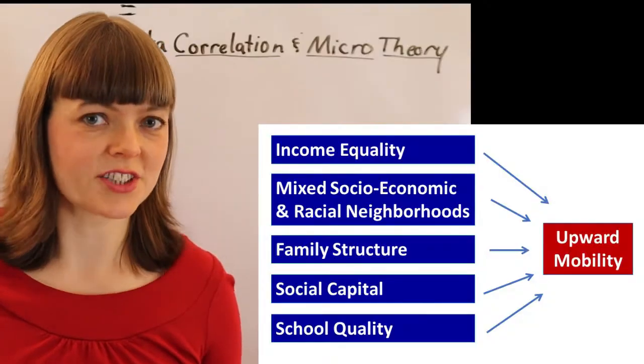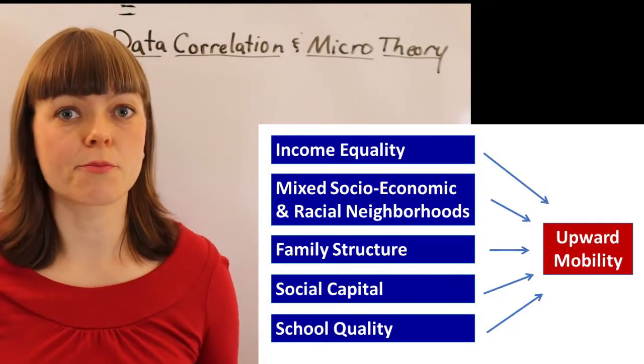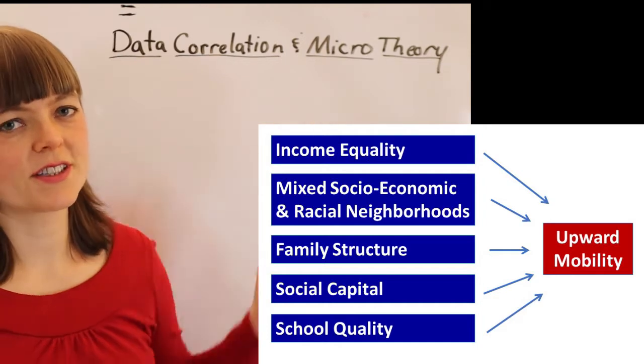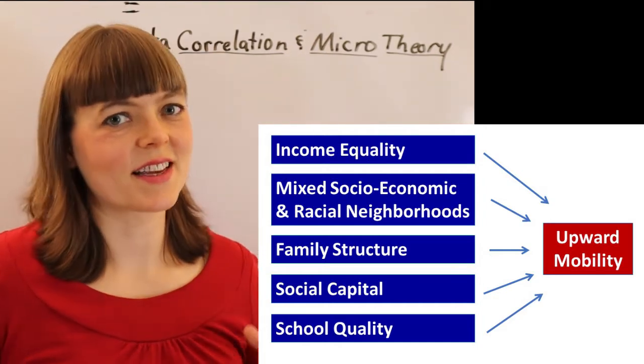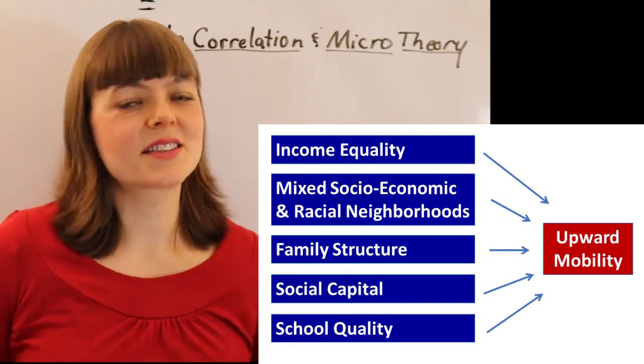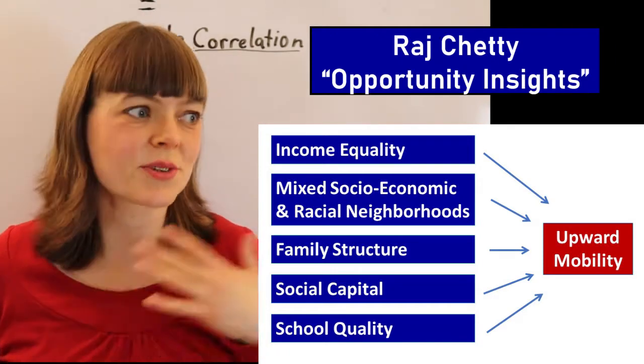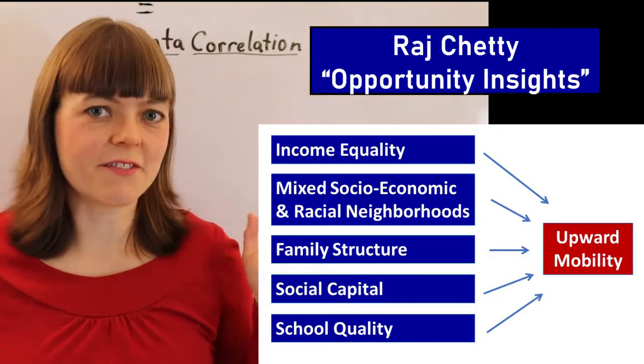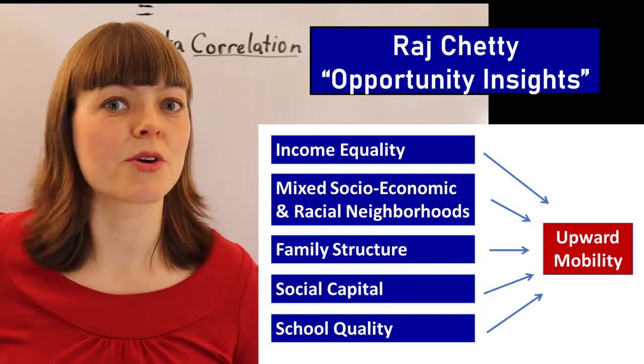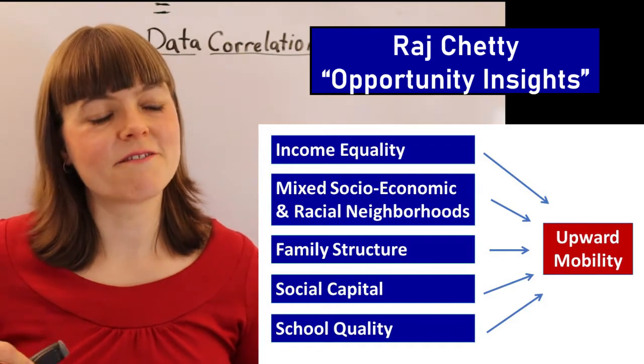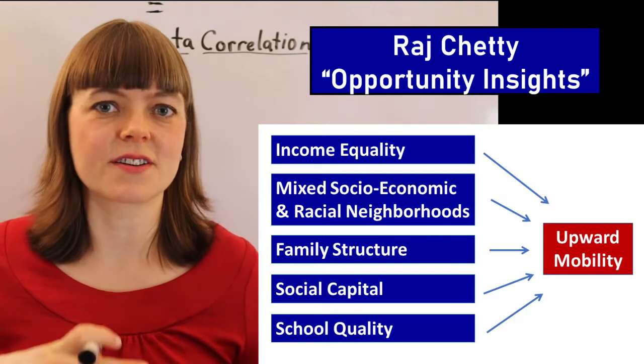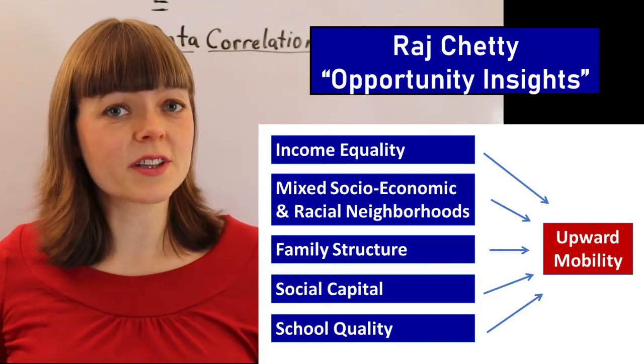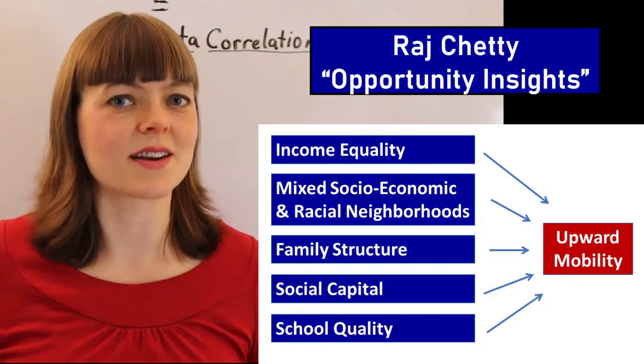In this video, I'd like to look at some correlations that we observe that are really interesting and fascinating for policy. I'd like to show you how a microeconomic model can help us think more deeply about the causal forces behind those statistics. The particular statistics I'd like to look at are the statistics on upward mobility. This is work done by Raj Chetty, who was on my committee in graduate school. It looks at the neighborhoods where kids are born and how that translates into their income later in life. He finds these five traits of neighborhoods that are associated with upward mobility. One measure is if a kid is born in the bottom 20% of the income distribution, what's their probability of reaching the top 20%? These traits are correlational, not causal, so we want to be thinking about what are the actual causal mechanisms behind them.